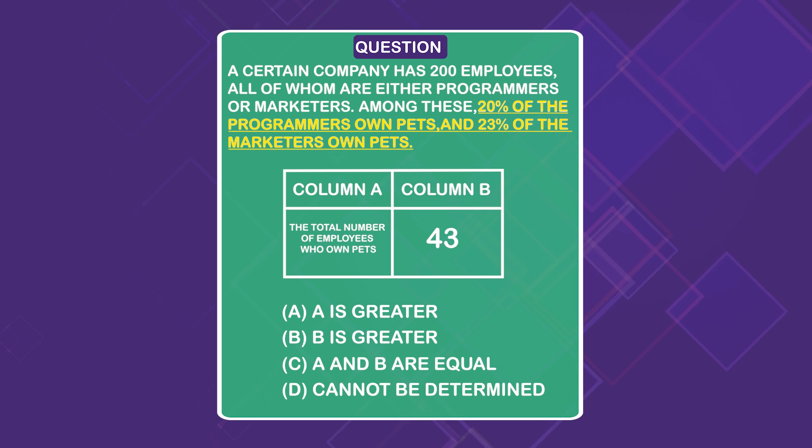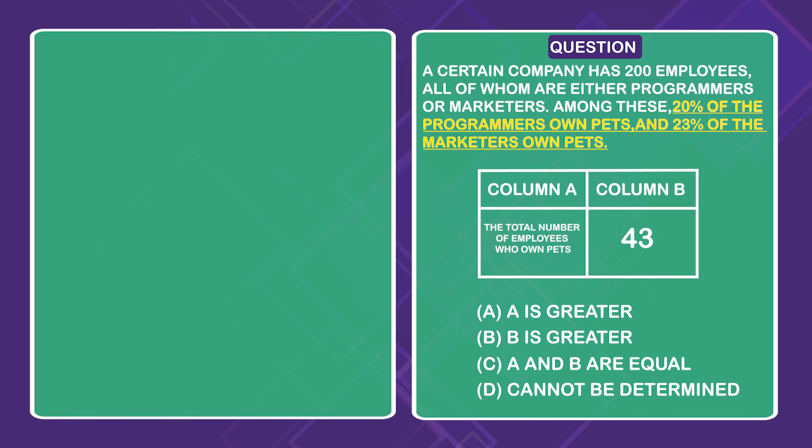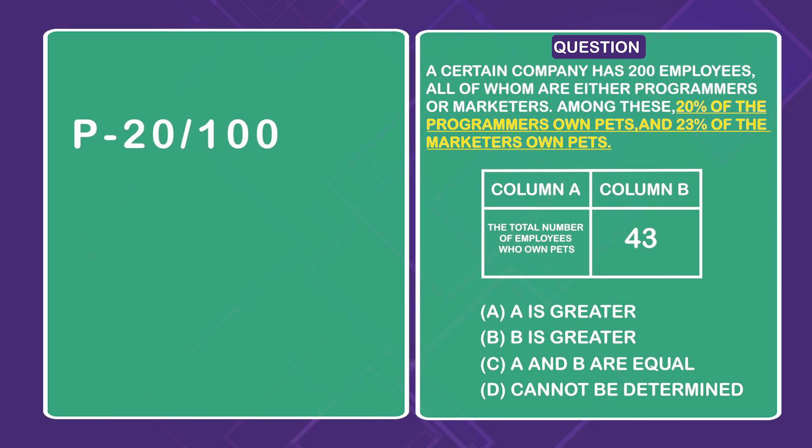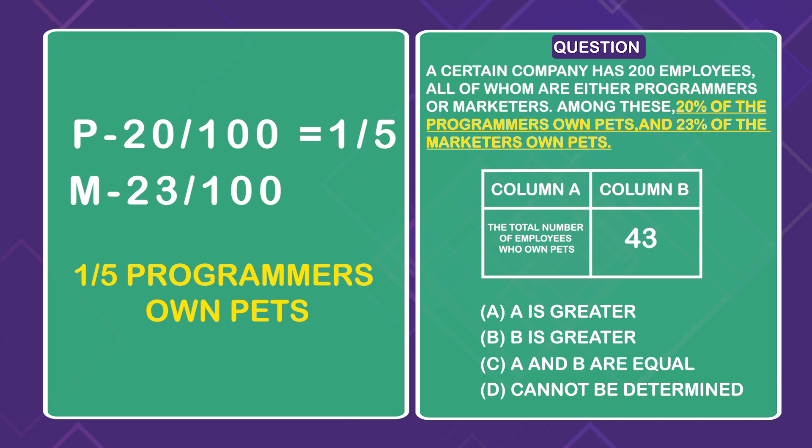So the number of programmers that own pets as a fraction is 20 out of every 100. And for marketers, it's going to be 23 out of 100. Now 20 out of 100 reduces to 1 over 5, meaning 1 out of every 5 programmers own pets.